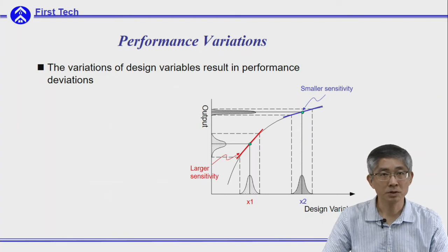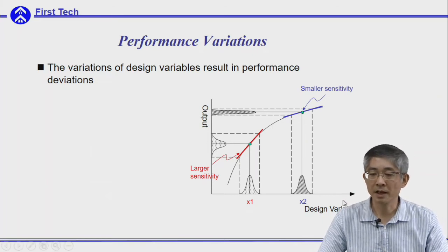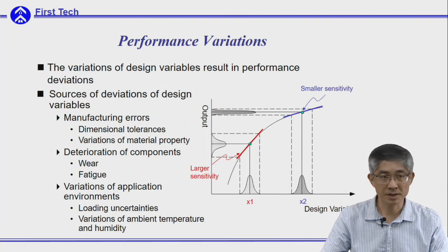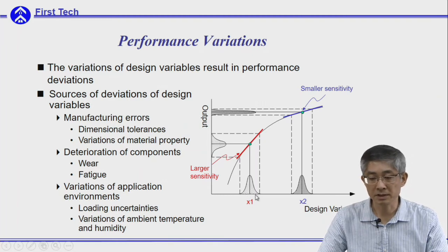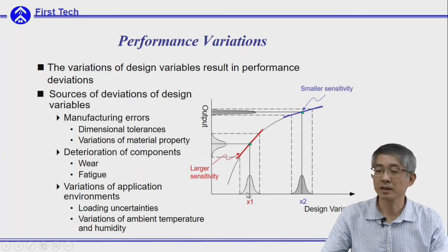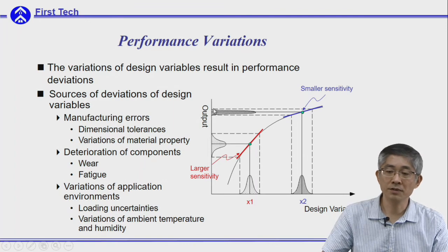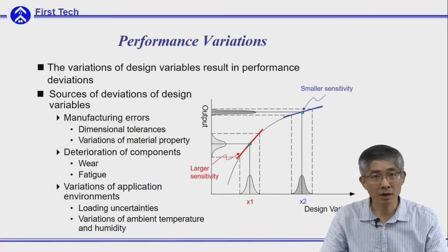Let me give you an example to show how parameter design affects output sensitivities. The variation of design variables can come from three sources: manufacturing, deterioration of components due to wear and fatigue, and the application environment. I use a normal distribution to represent the variation of x. If you reduce the tolerance, it will be effective since the output variation will be reduced — but this is a costly way. If you change to another location x₂, even though x₂ has the same tolerance, the output deviation is much smaller, since at location 2 it has a smaller sensitivity to the error.